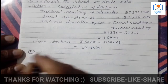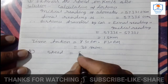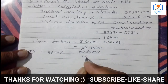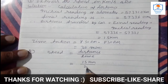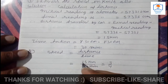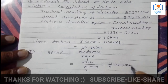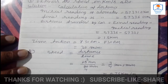For the first part, speed equals distance divided by time. So speed equals 15 km divided by 20 minutes, which simplifies to 3/4, giving us 0.75 km per minute.